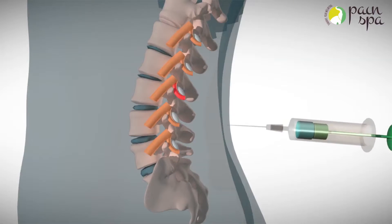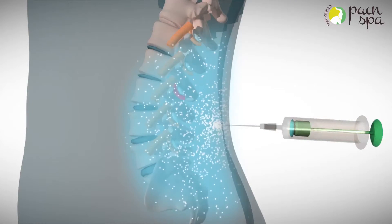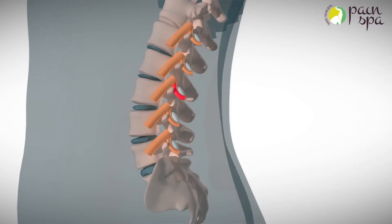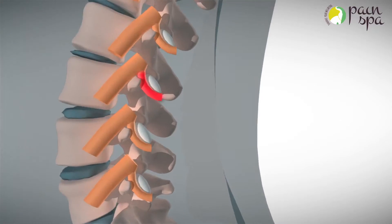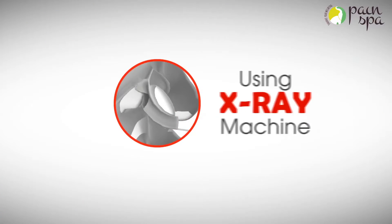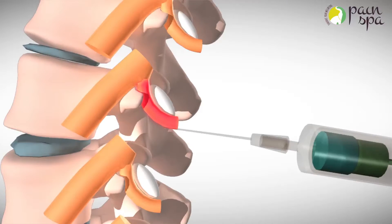The procedure is done under local anesthetic. Dr. Krishna will initially numb the skin and deeper tissues with the numbing medicine. He will then use a special x-ray machine to guide the needle close to the lumbar medial branch. A small amount of local anesthetic is then injected around the nerve.